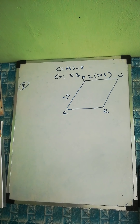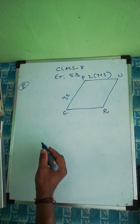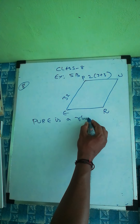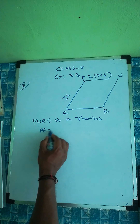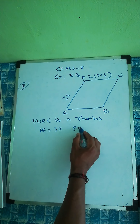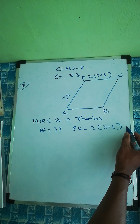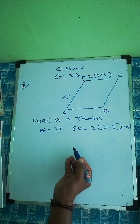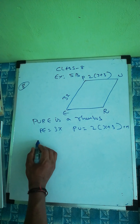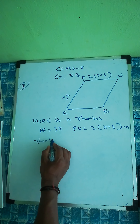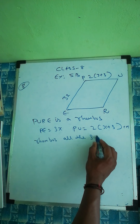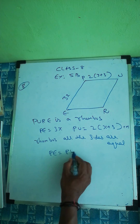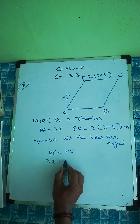Question number eight: In rhombus PURE, PE is given as 3x and PU is given as 2(x+3) centimeters. We know that in a rhombus all sides are equal, so we can say PE equal to PU, therefore 3x equal to 2(x+3).